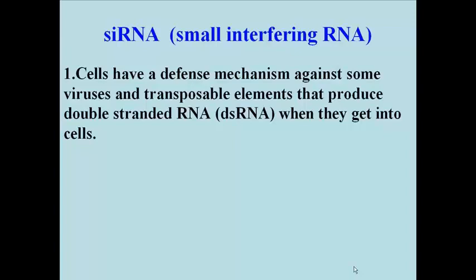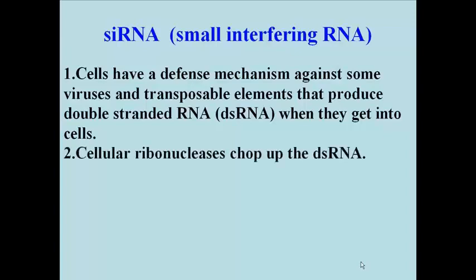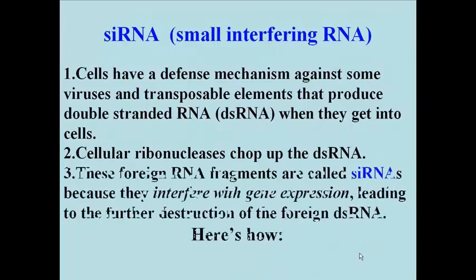At some point, these invaders produce double-stranded RNAs. Selective double-stranded RNA-specific ribonucleases can detect the double-stranded RNA and hydrolyze it down to smaller fragments. Some of the smaller foreign RNA fragments can hydrogen bond to complementary regions of the larger invasive RNAs and target them for degradation.